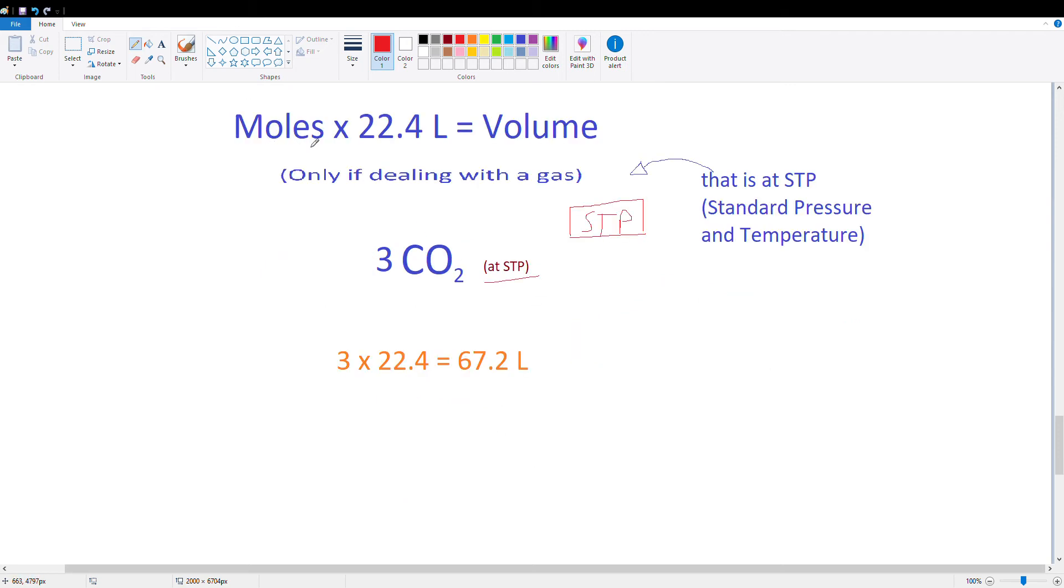So all we have to do, the formula says multiply the moles times 22.4. This will get us the volume in liters. Again, this is only for dealing with a gas at STP. So we're given the moles right here. The moles are 3 times 22.4. And that's going to give us 67.2. And remember, the volume answer is going to be in liters. So we know that 3 moles of carbon dioxide at STP is around 67.2 liters in volume. So this is another easy conversion.